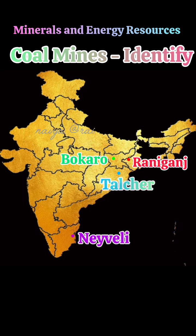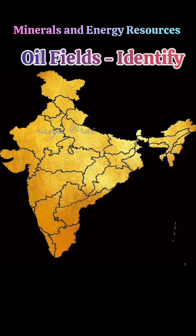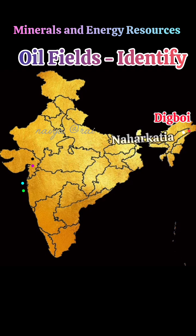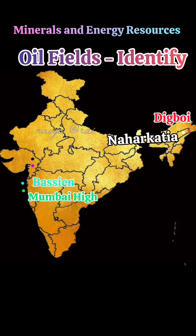Next we will see the map work: oil fields — this is also for identifying. Digboy, Nahara Katya, Mumbai Hai, Bassain, Ankleshwar, Kalol.